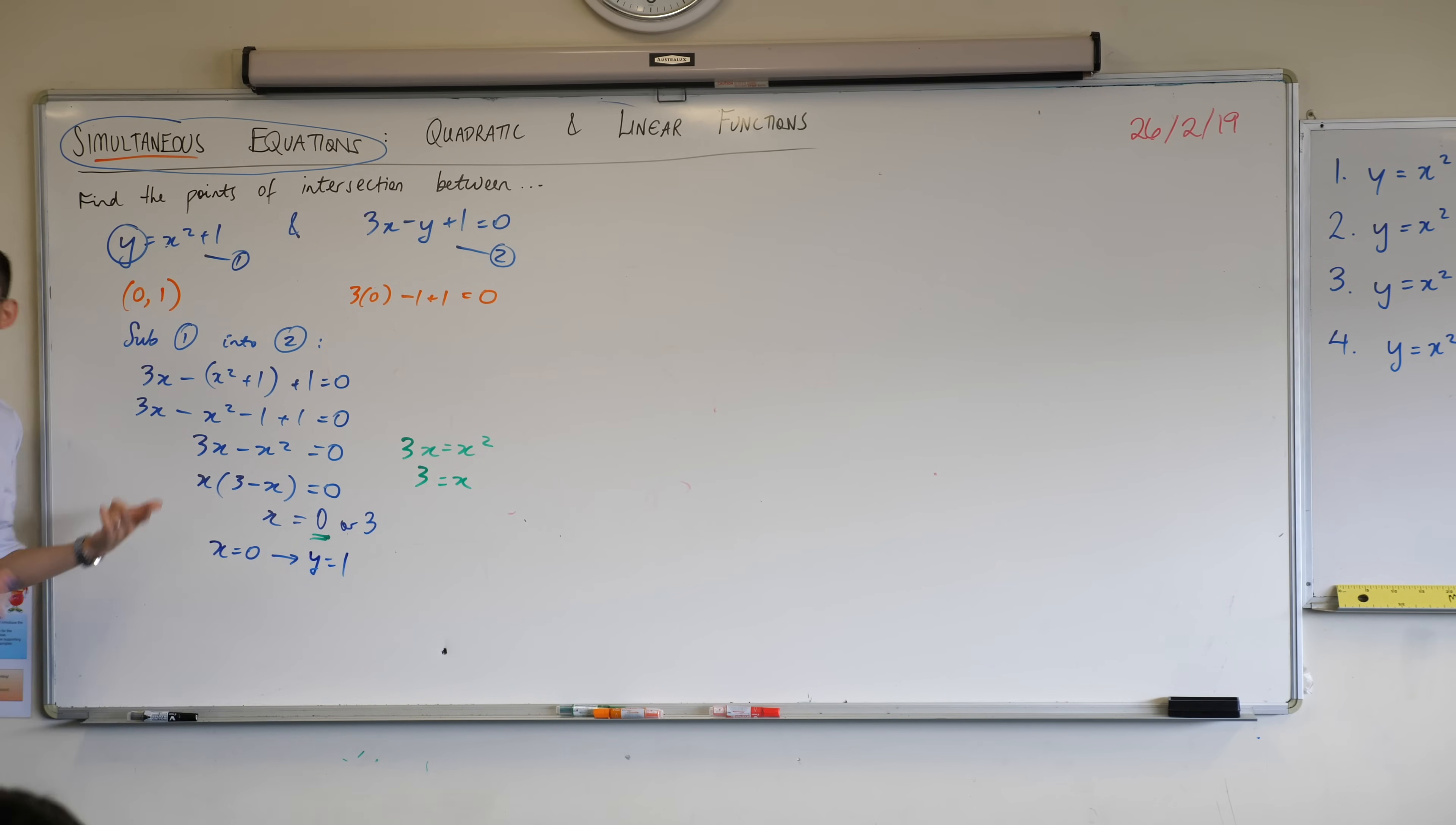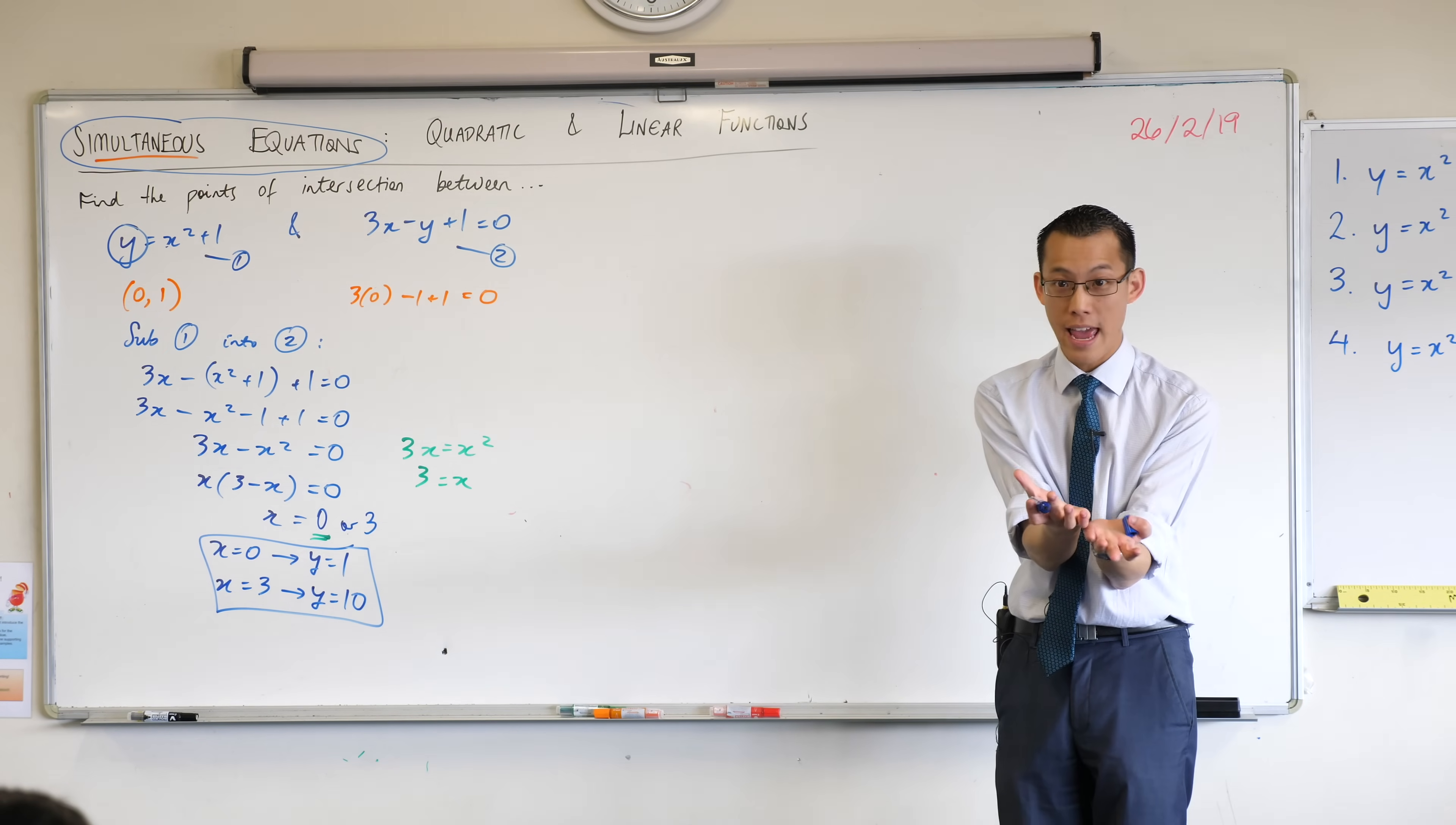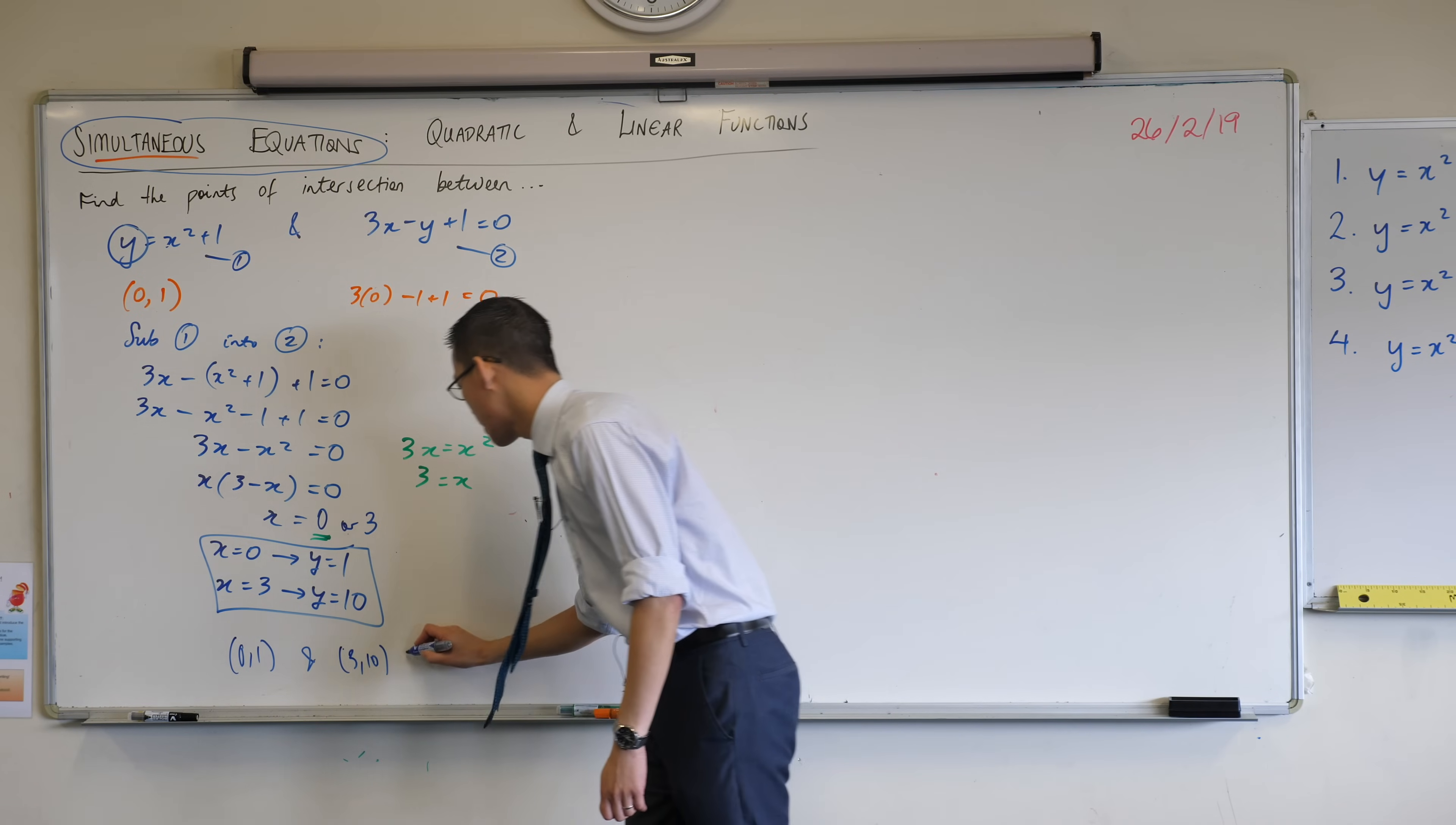When x equals zero, that gives me this value we already found up here, y equals one. But I have this other value that I also want to substitute and find its corresponding y value. So when x is equal to three, y is going to be three squared plus one, which is 10. Now, here is all the information that I need to answer the question, but I think it's nice, being that they ask for points, that we actually provide the answer as a pair of points. So I'm going to get 0,1 and 3,10. These are the points of intersection.